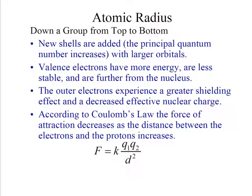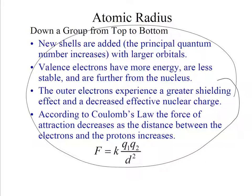New shells are added. The principal quantum number increases. Valence electrons have more energy. They're less stable. They're further from the nucleus. The outer electrons experience a greater shielding effect and a decreased effective charge because of Coulomb's law. The attraction decreases as the distance between the electrons and protons increase. If I ask you why does this element have a smaller radius than another element, this is your justification. If I ever ask you to justify your answer about atomic radius, this is it.